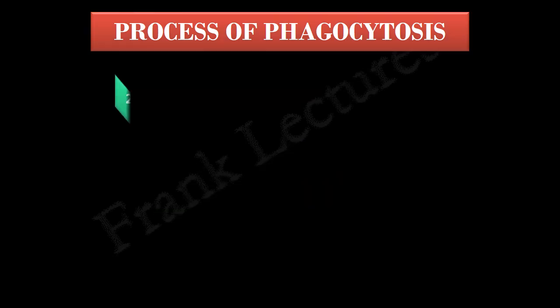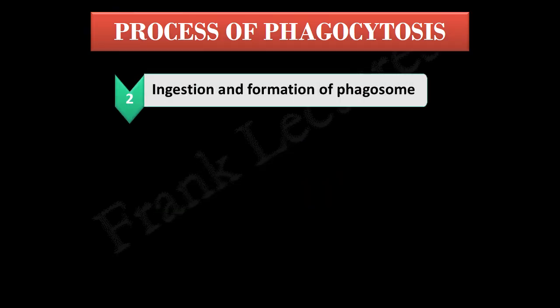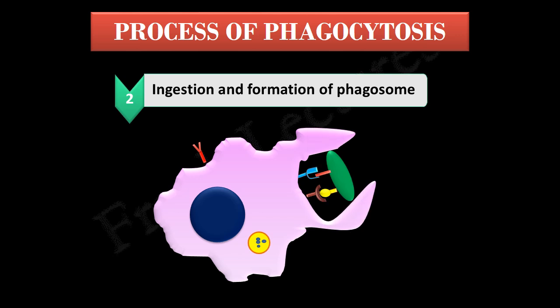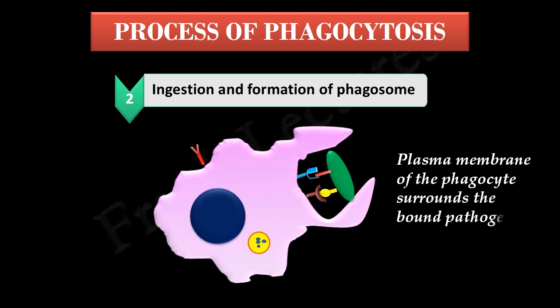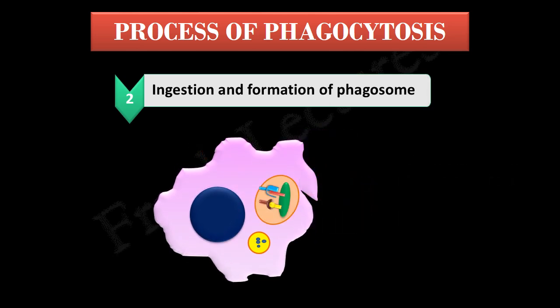In the next step, the plasma membrane of the phagocyte extends and surrounds the bound microbe. The membrane surrounding the pathogen then pinches off and internalizes the microbe by forming a sac known as a phagosome, or phagocytic vesicle.